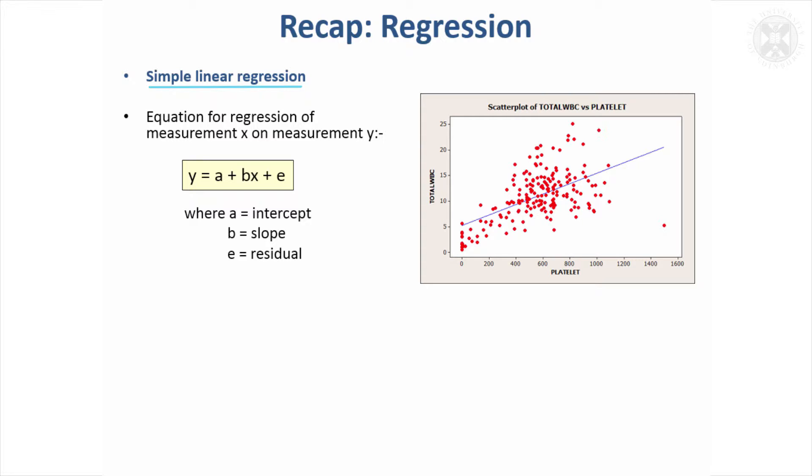Here we've got white blood cell count and platelets, and it looks as if they're positively related. That relationship can be described by a regression model, so this y would be the white blood cell count.